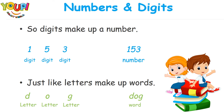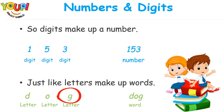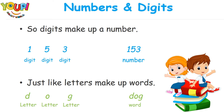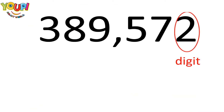Digits make up numbers just like letters make up words. Digit 1, digit 5, and digit 3 make up the number 153, just like letter D, letter O, and letter G make up the word 'dog.' So we need letters to write a word, and we need digits to make up a number.